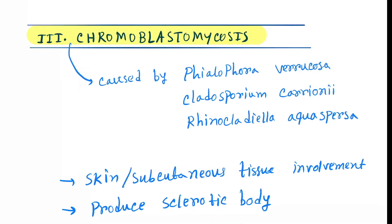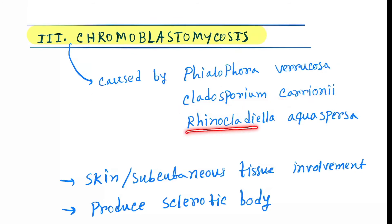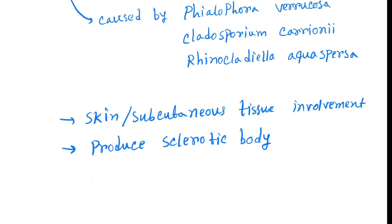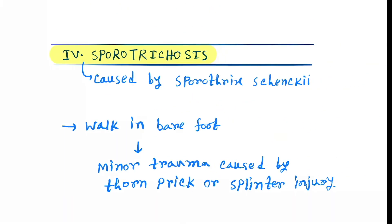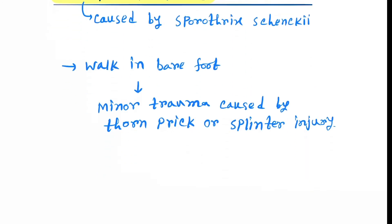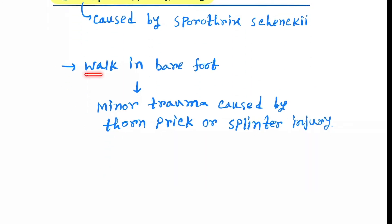Next is chromoblastomycosis, caused by Phialophora verrucosa, Cladosporium carrionii, and Rhinocladiella aquaspersa. It involves the skin and subcutaneous tissue and produces sclerotic bodies. Next is sporotrichosis, caused by Sporothrix schenckii, produced by walking barefoot.